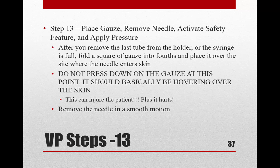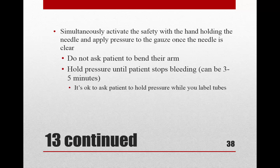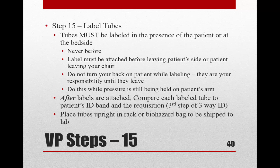Once everything is done, place gauze over the site, remove the needle entirely, press down on the gauze, activate the safety, and apply pressure — all in one smooth motion. You may ask the patient to hold pressure. Don't let them bend their elbow as that can cause further bruising. Make sure if the patient is holding pressure they're pressing hard enough. Throw the needle into the sharps container. If using a transfer device, do that now. Then label your tubes while the patient is still holding pressure and before you've bandaged them.